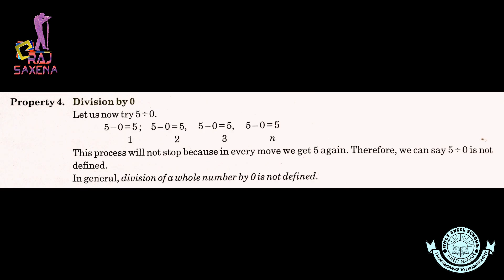Now, the next property is property number 4 — Division by 0. Agar kisi bhi whole number ko 0 se divide kia jaye toh hamesha uska koi bhi result nahi milega. It is not defined. That is, it is an endless process of subtracting 0 from that whole number — yeh process kabhi khatam nahi hogi. So, we can say that 5 divided by 0 is not defined. In general, division of a whole number by 0 is not defined.